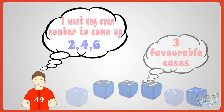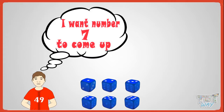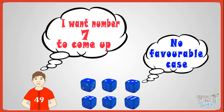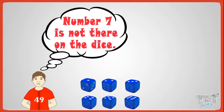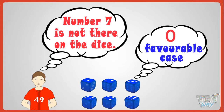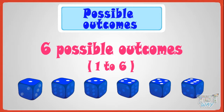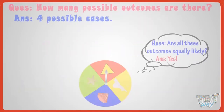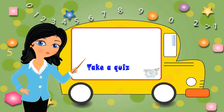Now, if I want number seven to come when I throw a dice, is there any favorable case? No, there will be no favorable case, as number seven is not there on the dice. So zero favorable cases exist in this case. Now you know what is probability, what are possible outcomes in probability experiments, what are equally likely cases, and what are favorable cases. Now go ahead and take a quiz to learn more.